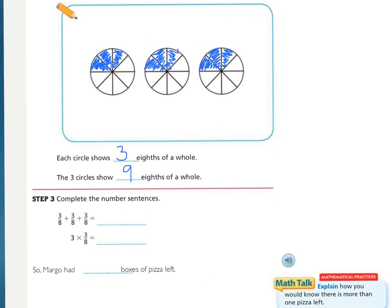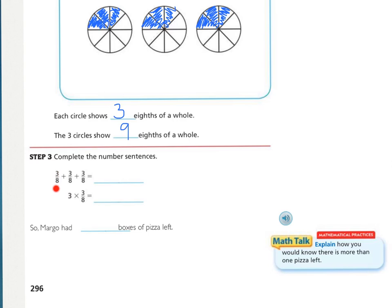So, then if we look and we complete our number sentences, we're ending up with an addition problem of 3 eighths plus 3 eighths plus 3 eighths. They all have the same denominator. But, right here, we know that repeated addition is the same thing as multiplication. So, if we add 3 eighths plus 3 eighths plus 3 eighths, we end up with 9 eighths, and so 3 times 3 eighths would also be 9 eighths. So, Margo had 9 eighths boxes of pizza left. You could say 9 eighths, but nobody really talks like that when they're talking about pizza, and so you should simplify that. How many eighths are there in 9? There are 1, and then what would be left over? 1, and the denominator stays the same. So, 9 eighths, or 1 and 1 eighths.